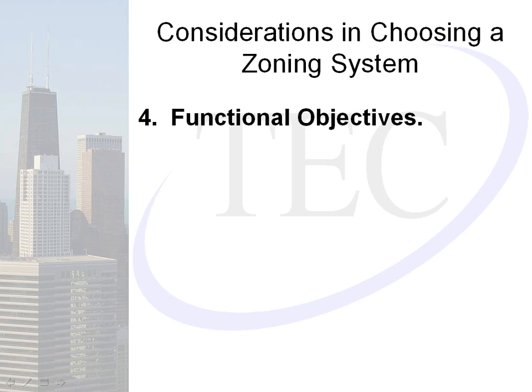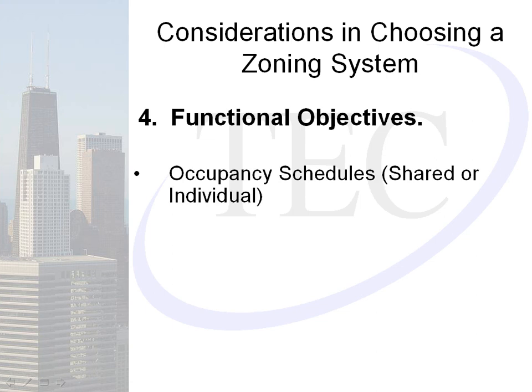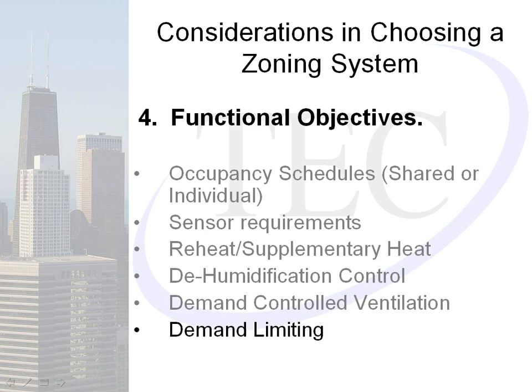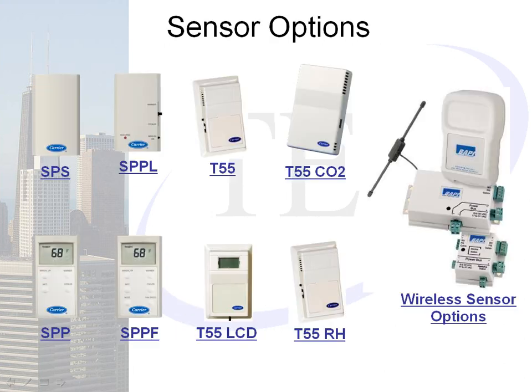The fourth consideration is functional objectives — things like occupancy schedules, shared or individual sensor requirements, reheat or supplementary heat, dehumidification control, demand control ventilation, demand limiting, and tenant billing. There are a variety of sensor options available: communicating sensors, plain temperature sensors, sensors with slide bars, digital display models with true set point adjustment, and advanced options such as CO2 sensing for demand control ventilation, relative humidity sensors for dehumidification control, and wireless sensor options.